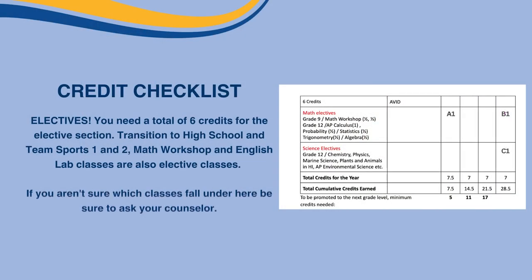Lastly, for the rest of your classes, they're under Electives. You'll need a total of six elective credits for the elective section. Transition to High School, Team Sports 1 and 2, Math Workshop, and English Lab classes are also elective classes. If you aren't sure which classes fall under here, be sure to ask your counselor.